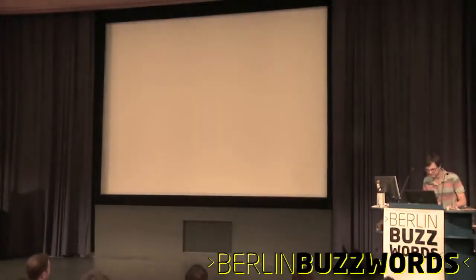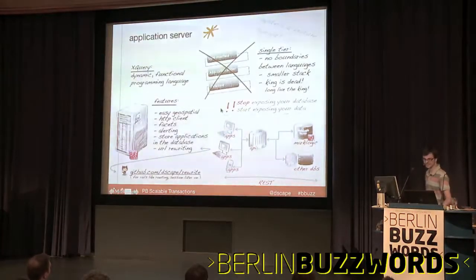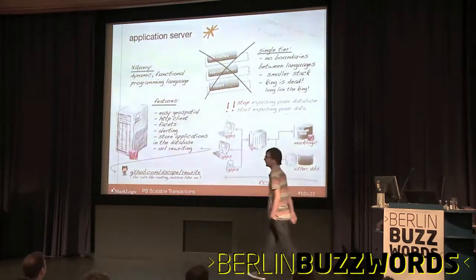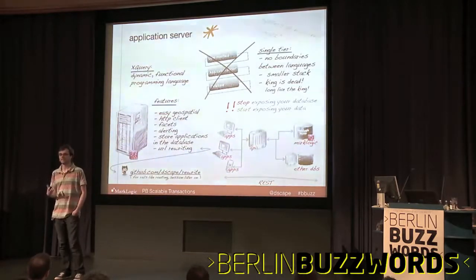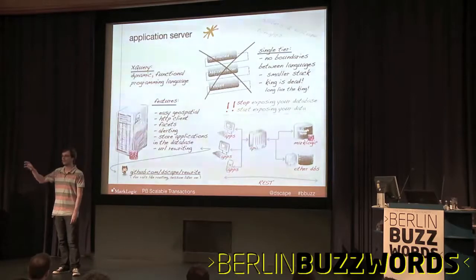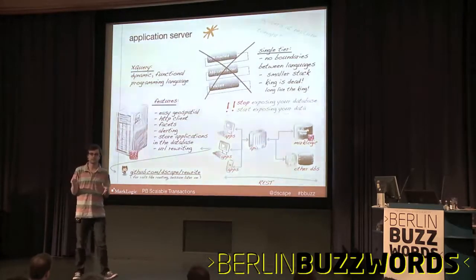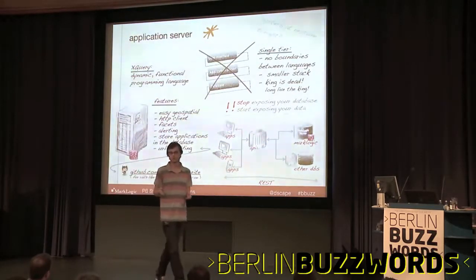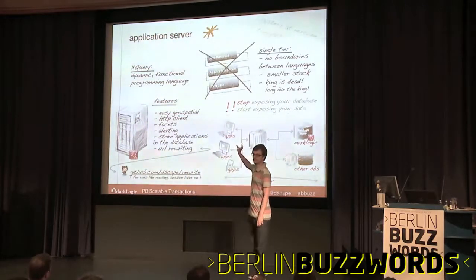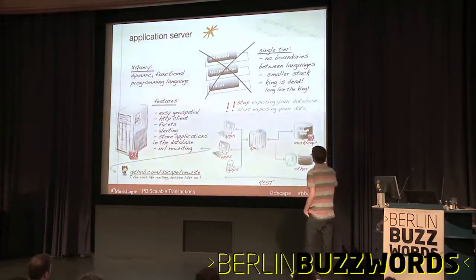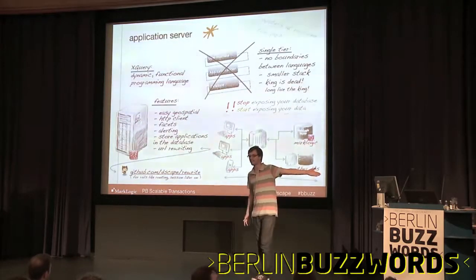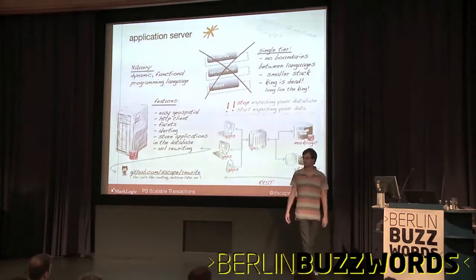What is so cool about this is that for years and years we've been exposing our database with SQL commands and sending it over the wire. We believed that's going to solve our data problems — data independence because everyone has SQL. But in reality, you try to migrate to another database and it doesn't work because all the extensions just don't allow it. If you have an HTTP server, what you're showing is your content, the things you want to serve. You stop exposing your database over the wire and you start exposing your data — and that's a really good thing.